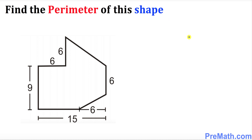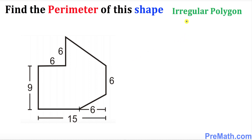Hello again everyone. In this video tutorial we are going to find the perimeter of this given shape. Let me remind you that this shape is also called an irregular polygon, and we all know that polygon means a many-sided shape.